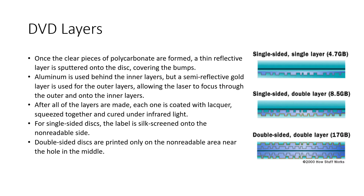Once the clear pieces of polycarbonate are formed, a thin reflective layer is sputtered onto the disc covering the bumps. Aluminum is used behind the inner layers, but a semi-reflective gold layer is used for the outer layers, allowing the laser to focus through the outer and onto the inner layers. After all of the layers are made, each one is coated with a lacquer, squeezed together, and cured under infrared light.